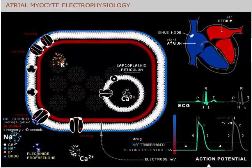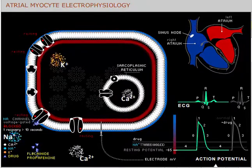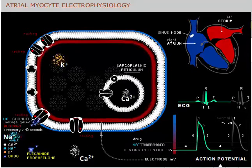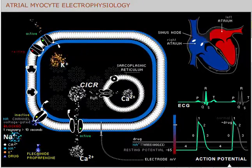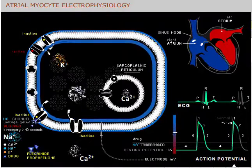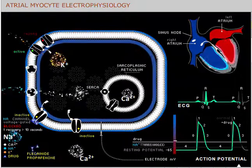By inhibiting sodium influx into cardiac myocytes, they also slow conduction through the atria and ventricles. The slowed conduction results in a prolonged PR interval and widening of the QRS complex on the electrocardiogram.